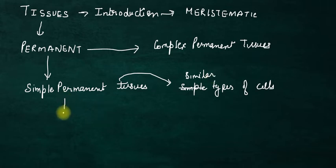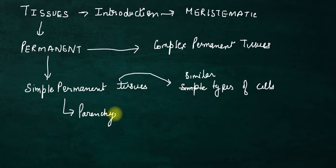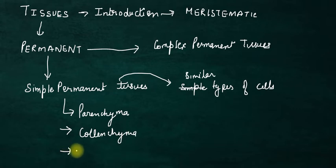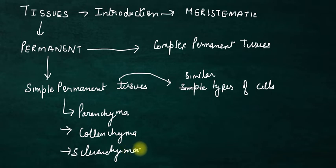Simple permanent tissues are of three types. First, you have parenchyma tissues. Second, you have colenchyma tissues. And third, you have sclerenchyma tissues. These are the three types of tissues categorized under simple permanent tissues.